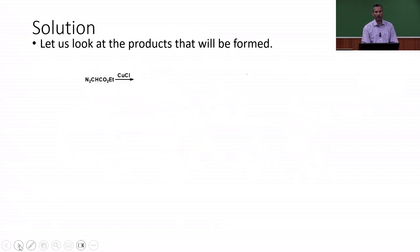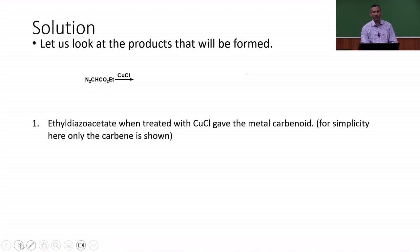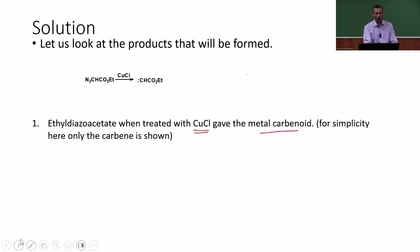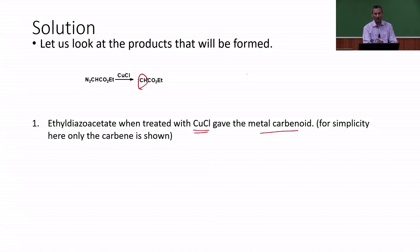Let us look at ethyl diazoacetate and how it undergoes reaction. In the presence of a metal — specifically copper chloride — ethyl diazoacetate gives a metal carbenoid. For simplicity, we will talk about the carbene unit: a carbon with 2 electrons, making it a 6-electron species. We will be mainly dealing with carbenes in this session and the next.